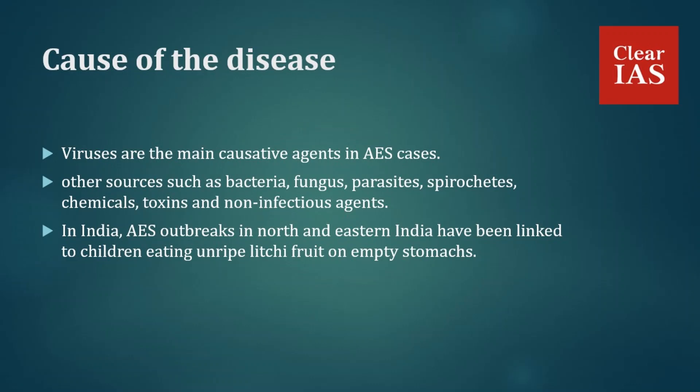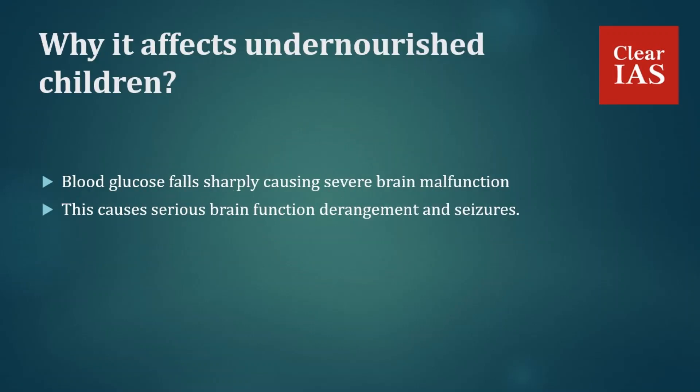This is how lychee is related to the cause of Acute Encephalitis Syndrome. In undernourished children, blood glucose falls sharply, causing severe brain malfunction — encephalopathy — leading to seizures, coma, and death in many cases. This is because undernourished children lack sufficient glucose reserves in the form of glycogen, and the production of glucose from non-carbohydrate sources is blocked midway, leading to low blood sugar levels and serious brain function derangement.